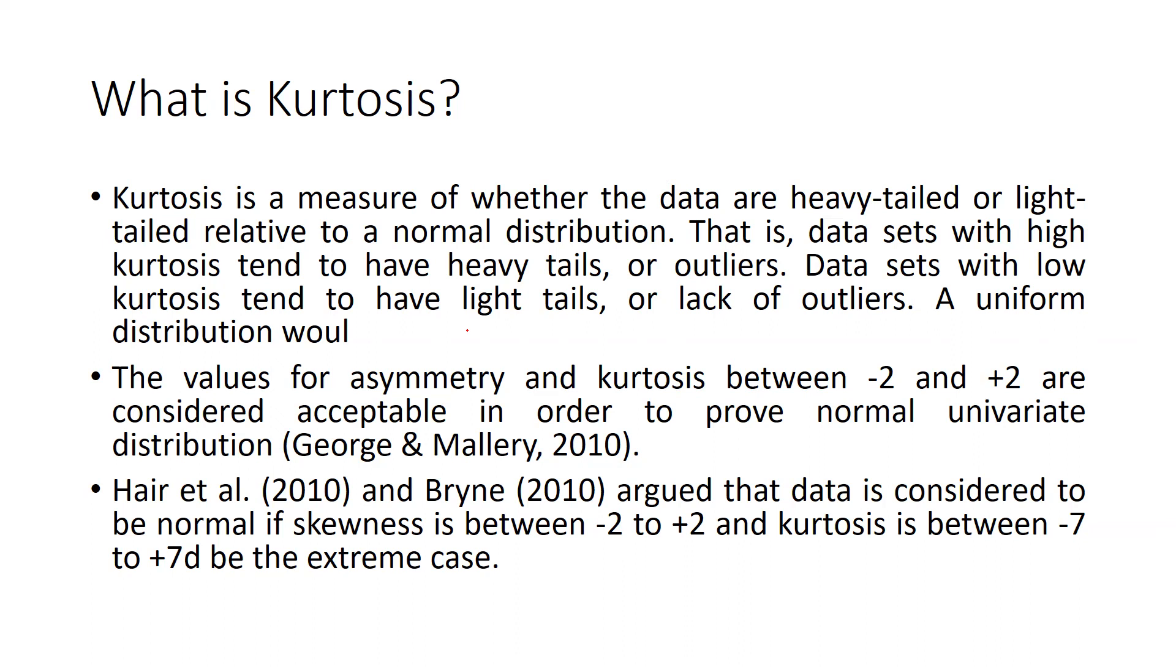So, data set with low kurtosis tend to have light tails or lack of outliers. A uniform distribution that would be we can see here the value for is symmetric and kurtosis between minus 2 and plus 2. That is considered acceptable in order to prove normal univariate distribution. That is why citation is here George and Mallory 2010.